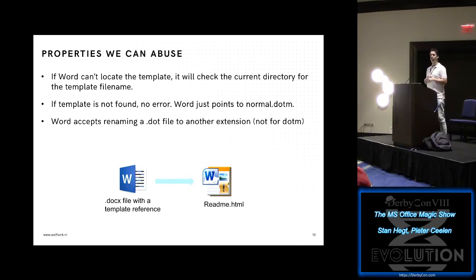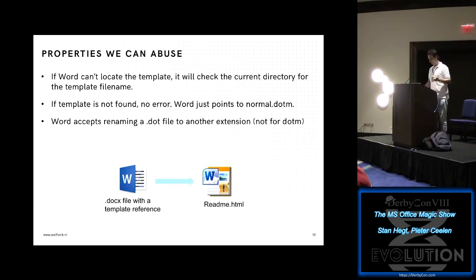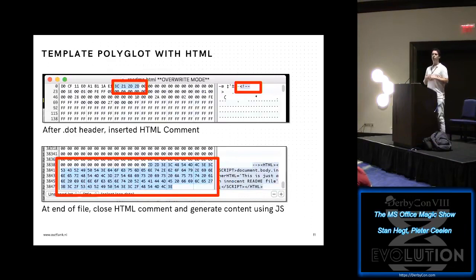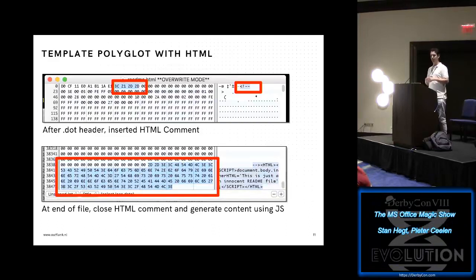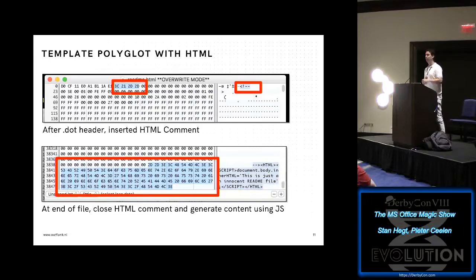But wait a minute — I opened the readme.html file and it appeared to be an HTML file. And now I'm saying it's a template file. What's going on? Well, this is a polyglot. The template is a binary compound file. We leave the header intact and afterwards we insert an HTML comment tag. At the bottom of the document, we extend it with the closing tag and some HTML with JavaScript that renders an innocent-looking message. And Word accepts this — the binary compound file doesn't crash Word.